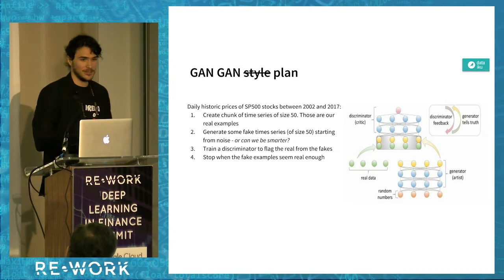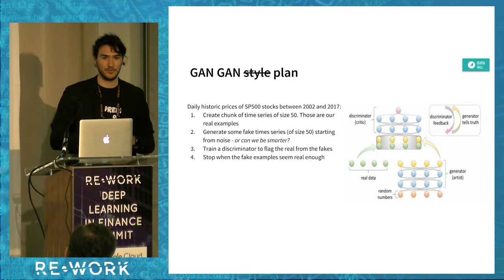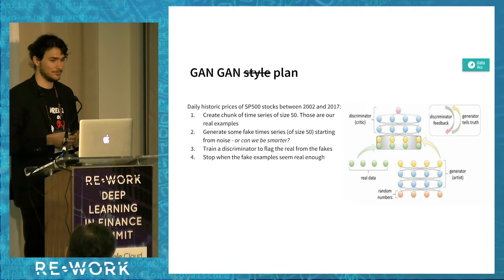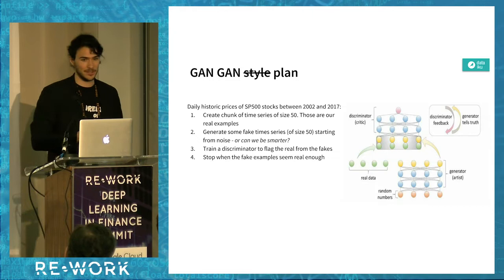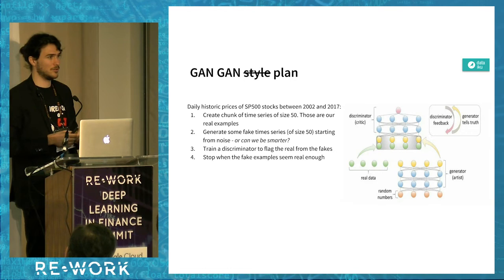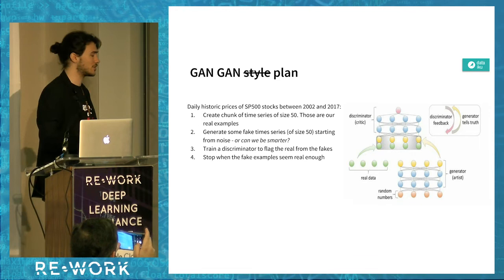Our plan was quite simple. We took daily historic prices of S&P 500 stocks between 2002 and 2017, and took an arbitrary decision to chunk them into windows of 50 points — these were our real examples. We generated fake time series of the same size starting from noise, with a slightly smarter trick. We then trained the discriminator to flag real from fake, and in a sub-step, for every batch and epoch, we retrained the whole GAN but just the generator part.